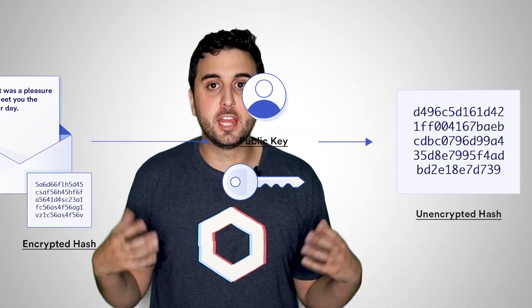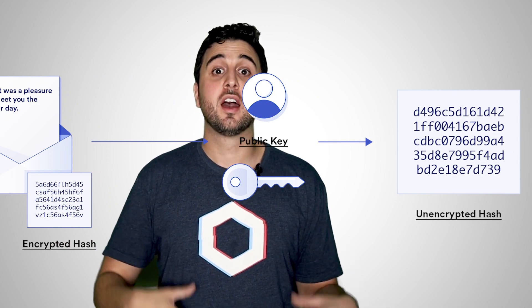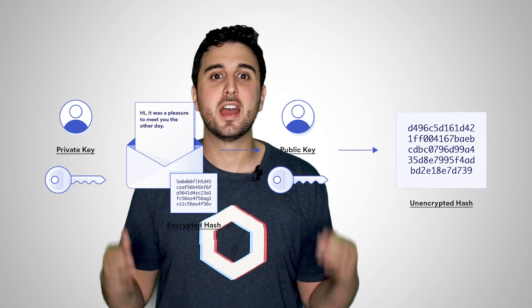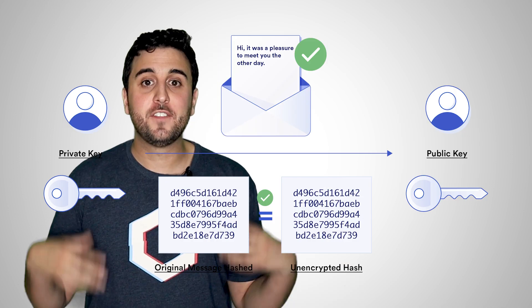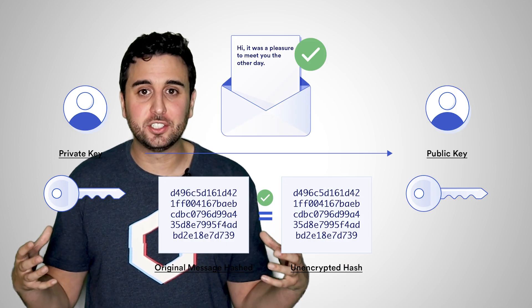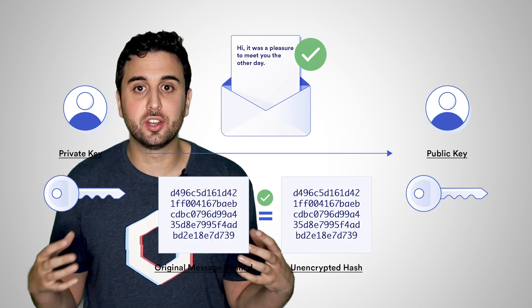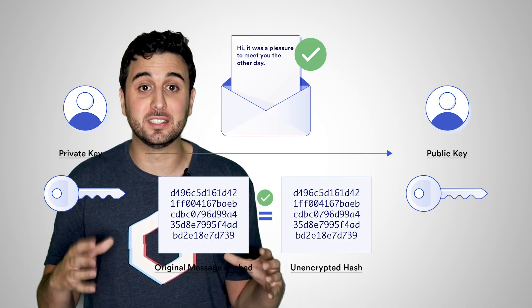The recipient can then decrypt the hash with their public key, hash the original message, and compare the hashes. If the hashes match, the recipient can be assured that the private key owner sent the message.